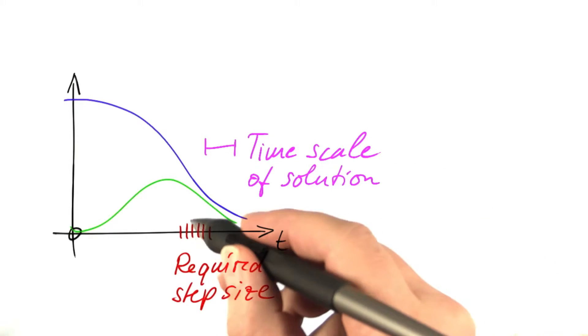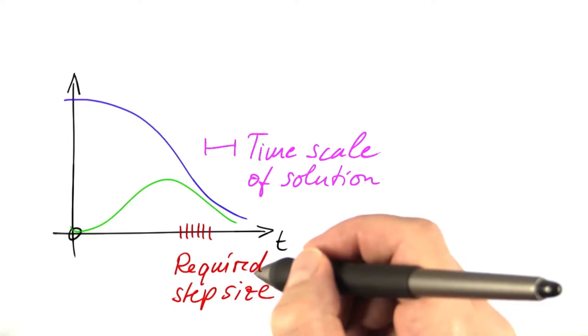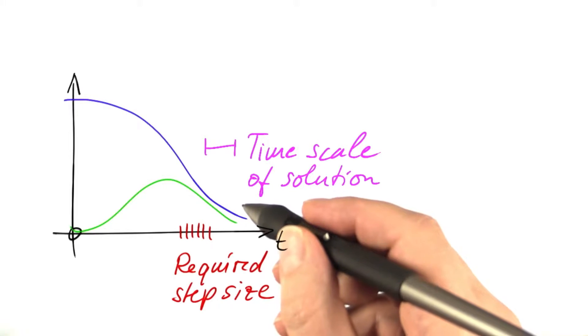In the previous quiz, you saw that the solution evolves on a pretty long time scale, but the step size that we are required to use in the solver is pretty short.